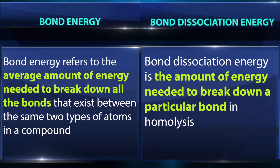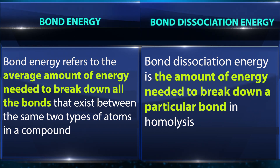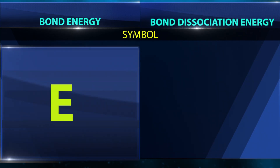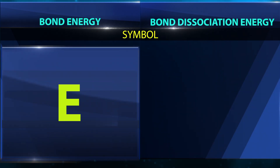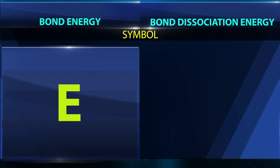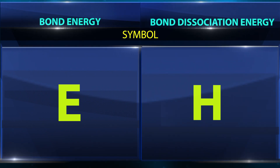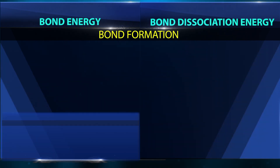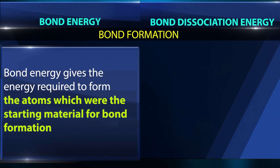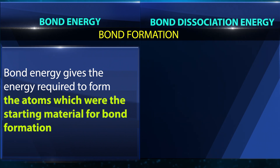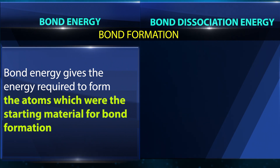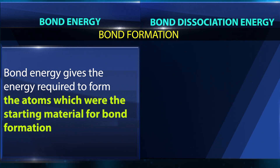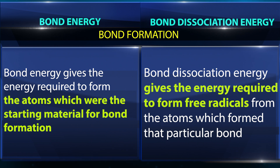In terms of symbols, bond energy is denoted by E, while bond dissociation energy is denoted by H. Regarding bond formation, bond energy gives the energy required to form the atoms which were the starting material for bond formation.